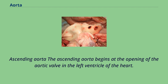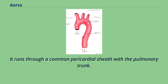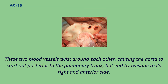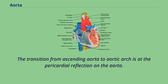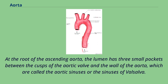The ascending aorta begins at the opening of the aortic valve in the left ventricle of the heart. It runs through a common pericardial sheath with the pulmonary trunk. These two blood vessels twist around each other, causing the aorta to start out posterior to the pulmonary trunk but end by twisting to its right and anterior side. The transition from ascending aorta to aortic arch is at the pericardial reflection on the aorta. At the root of the ascending aorta, the lumen has three small pockets between the cusps of the aortic valve and the wall of the aorta.